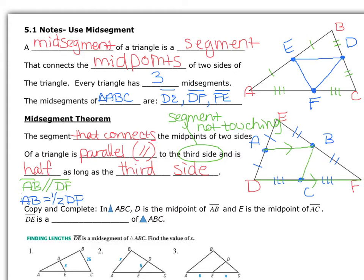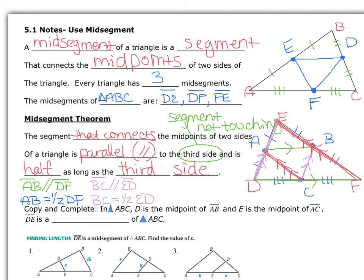Looking at the other mid-segments: BC is the mid-segment parallel to the third side ED, which is the side opposite from it. So BC is parallel to ED, and BC equals half of ED. The third mid-segment AC is parallel to EF, and the length of AC is half the length of EF.